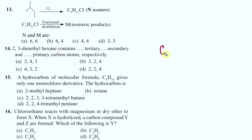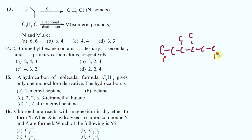2,3-dimethylhexane - correct. 2,3-dimethylhexane contains: let us label them - this is 1 degree, this is 2 degree, this is 3 degree. This is also 1 degree. How many tertiary? It has 2 tertiary, 2 secondary and 4 primary carbons. Simple one.